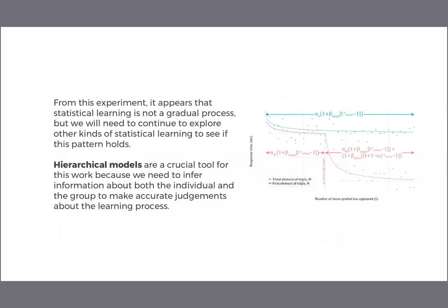To wrap things up, let's think back to the original question about the shape of the learning curve. We saw that learning in this experiment is really not gradual, but showing this required a hierarchical model where we could look carefully at individual-level data. The next step will be to explore other experimental tasks like this one and see if we can find similar patterns there.